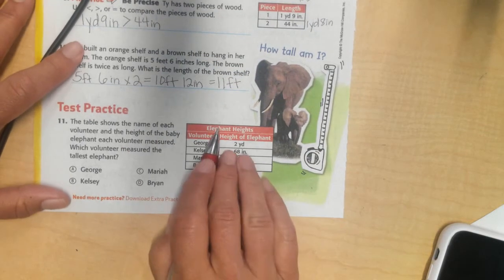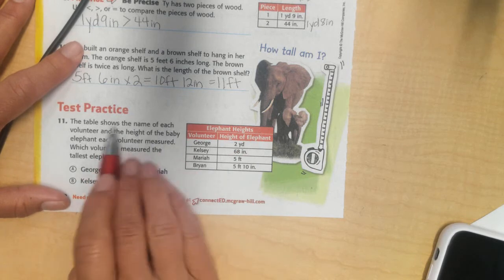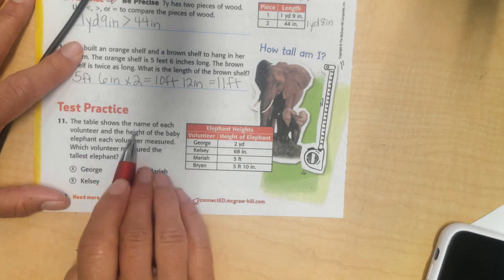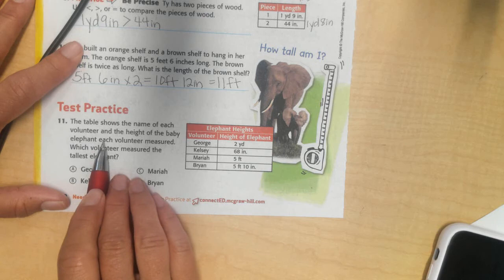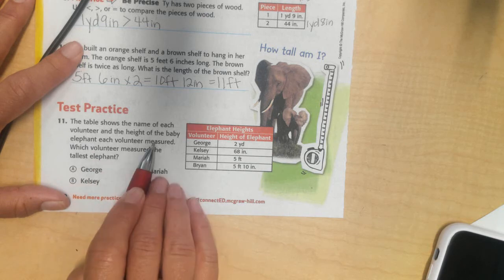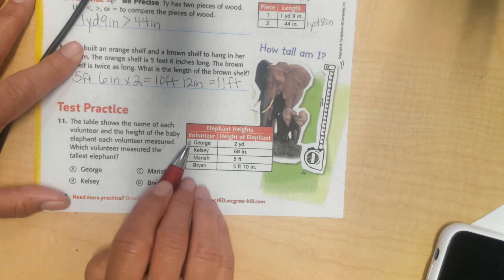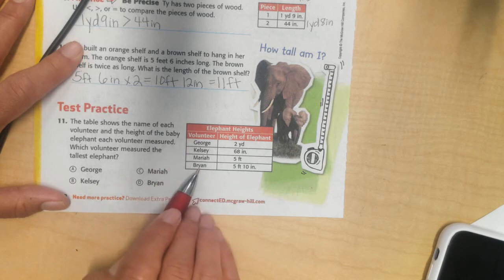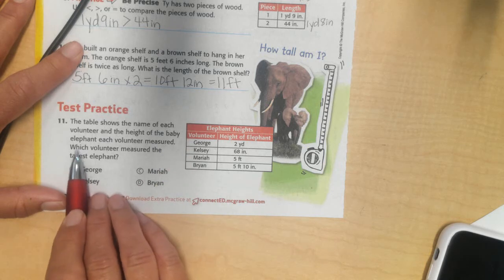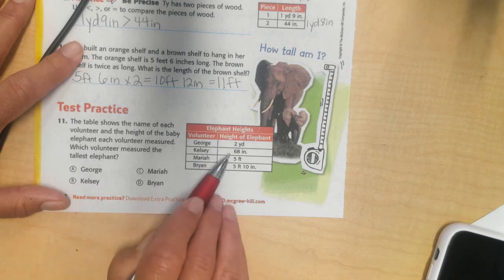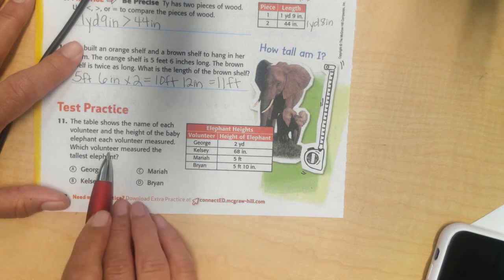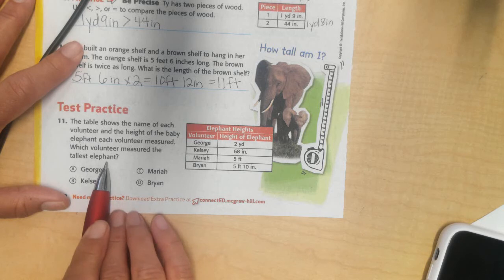Alright, over here I got elephants. The table shows the name of each volunteer and the height of the baby elephant each volunteer measured. Oh, the first time I read it I thought these were the names of the elephants. So, a volunteer measured these elephants and they wrote it in yards or inches or feet.